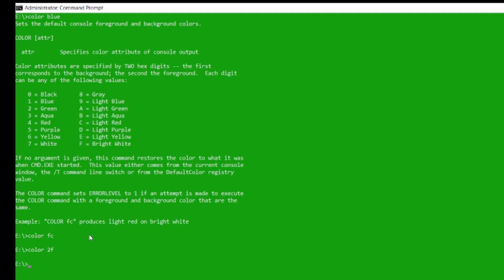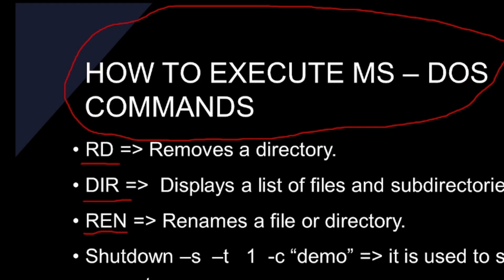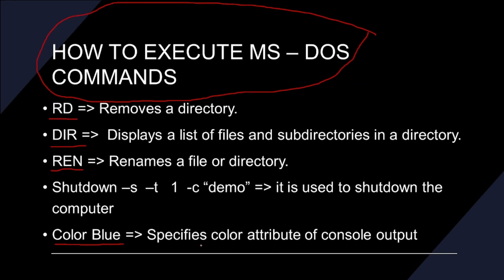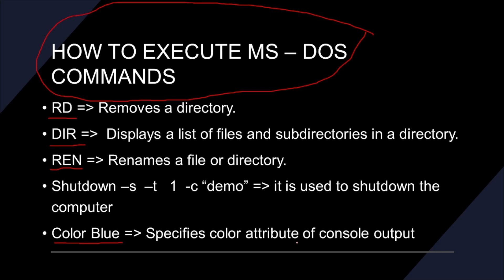Now let's go back to the slide. You can type COLOR BLUE — it says specify color attribute of control outputs. That's basically it. Now let's look at the SHUTDOWN command. This command is used to shut down the computer. The syntax is: SHUTDOWN space hyphen S space hyphen T space 1. The number 1 specifies the delay in seconds before shutdown. You can specify 120 seconds, which will display a dialog box counting down before the machine shuts down.